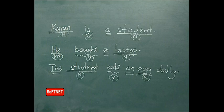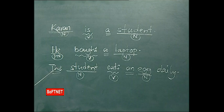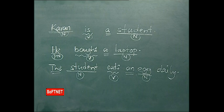Student is a countable noun — it is preceded by the word 'a'. In the second sentence, laptop is a countable noun, also preceded by 'a'. The student is preceded by 'the', and in the object place we have 'an egg' — egg is preceded by 'an'. These words — a, an, the — are articles.